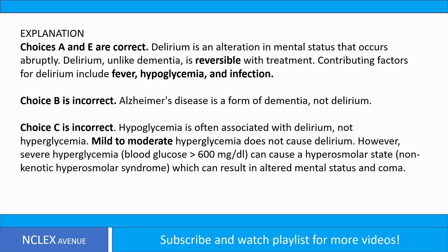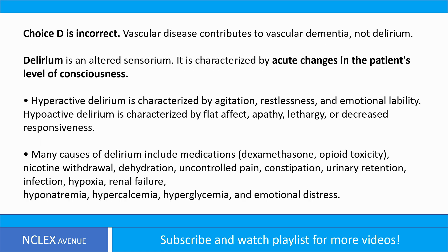Delirium is an alteration in mental status that occurs abruptly. Delirium, unlike dementia, is reversible with treatment. Contributing factors for delirium include fever, hypoglycemia, and infection. Choice B is incorrect — Alzheimer's disease is a form of dementia, not delirium. Choice C is incorrect — hypoglycemia is often associated with delirium, not hyperglycemia. Mild to moderate hyperglycemia does not cause delirium; however, severe hyperglycemia (blood glucose greater than 600 mg/dL) can cause a hyperosmolar state — non-ketotic hyperosmolar syndrome — which can result in altered mental status and coma. Choice D is incorrect — vascular disease contributes to vascular dementia, not delirium.